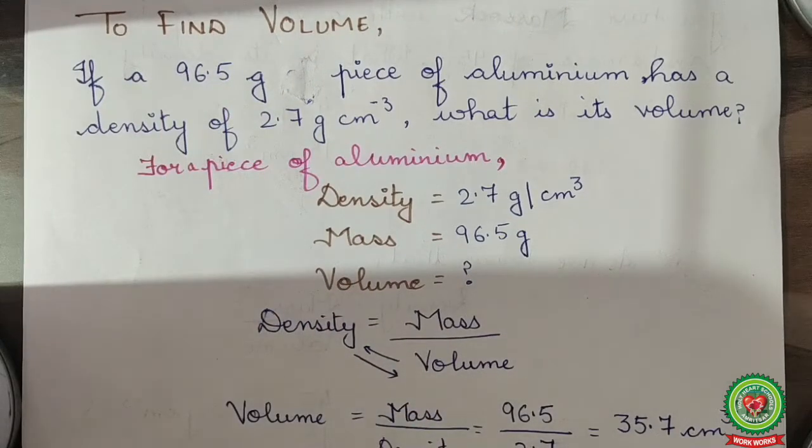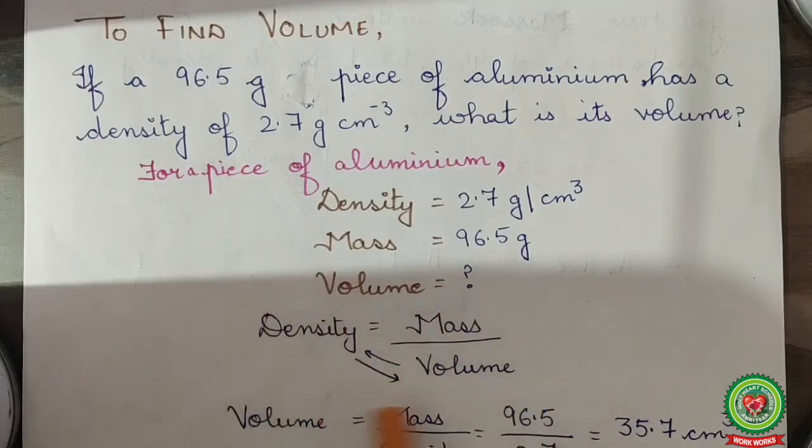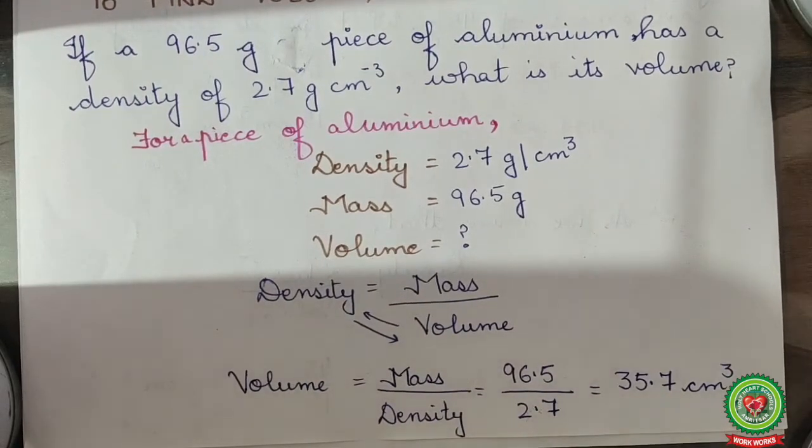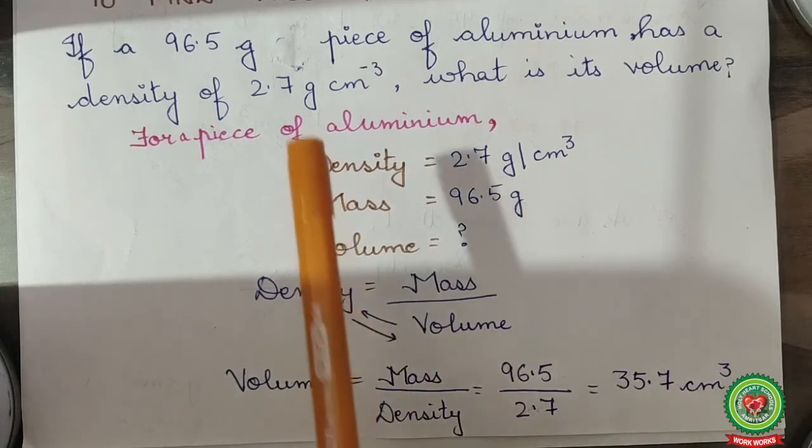We know density equals mass over volume. From this expression, we'll take out the formula for volume. Volume equals mass upon density. Putting the values, mass is 96.5 and density is 2.7. On solving, we get 35.7 centimeter cube which is the volume of aluminium.